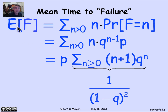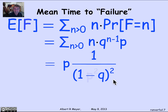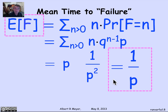The expectation of F is P times 1 over (1 minus Q) squared. Since 1 minus Q equals P, this simplifies to P times 1 over P squared, or 1 over P. The expected number of flips before you get a head is 1 over the probability of a head. For example, with a fair coin where P is one half, the expected number of flips until the first head is 2. If you had a biased coin where the probability of a head was one third, the expected number of flips until a head would be 3.